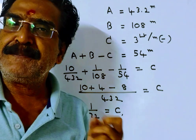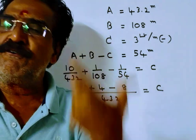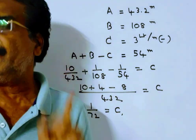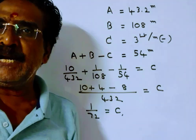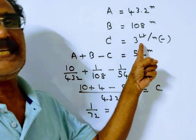That means pipe C can empty a full tank in 72 minutes. Pipe C can empty 3 liters per minute.